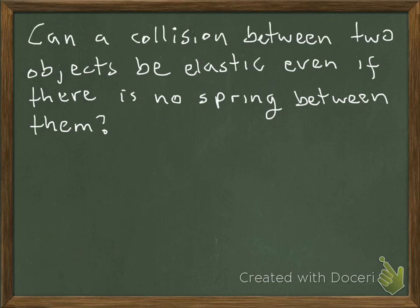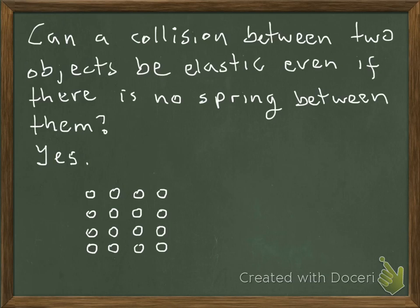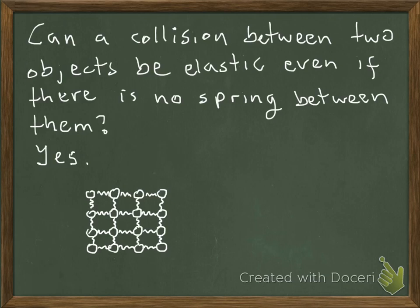Can a collision between two objects be elastic even without a spring between them? Yes. A solid object has molecules or atoms fixed at particular positions, keeping the object rigid due to interactions between those molecules. We can visualize those interactions as springs — the intramolecular forces, though electrical in nature, behave as if molecules are attached by springs. Try to pull one molecule away and it is attracted; push it too close and it is repelled. This is an elastic force.